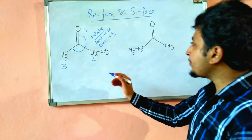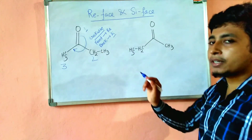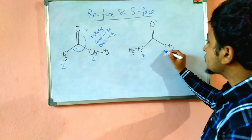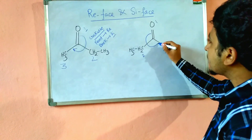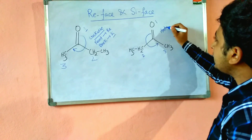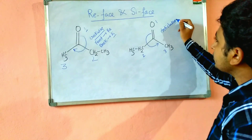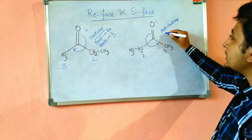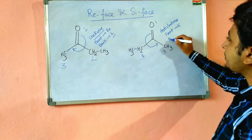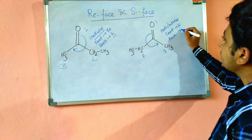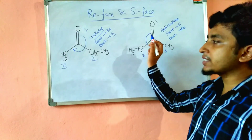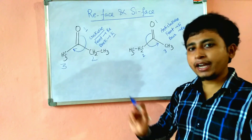Now if you see this molecule — these two are identical but both have different faces. In this case, 1 to 2 to 3 is the anti-clockwise direction, so this is anti-clockwise and therefore the front-side attack is the Si-face attack. So the front side of this molecule is exactly the same as the back side of the other molecule, and vice versa.